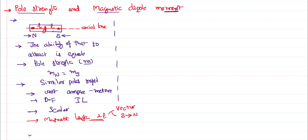Be careful: pole strength is a scalar, but the magnetic length is a vector. Now we will talk about one more physical quantity called the magnetic dipole moment.